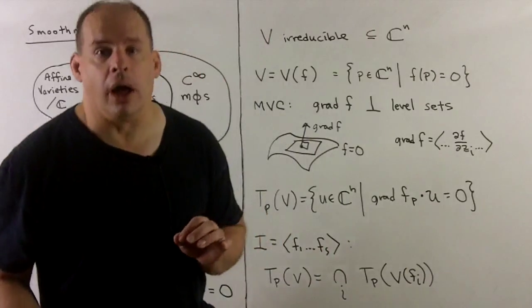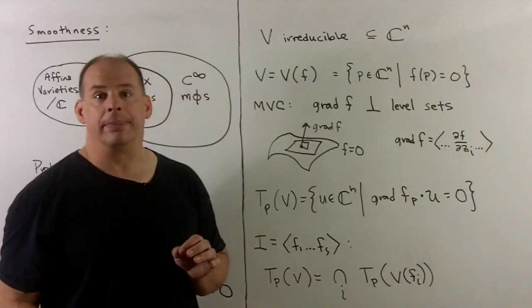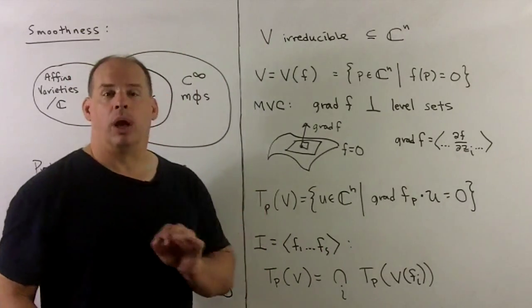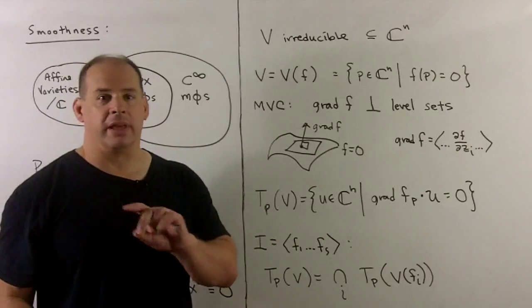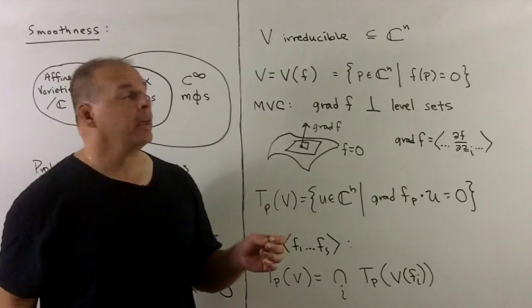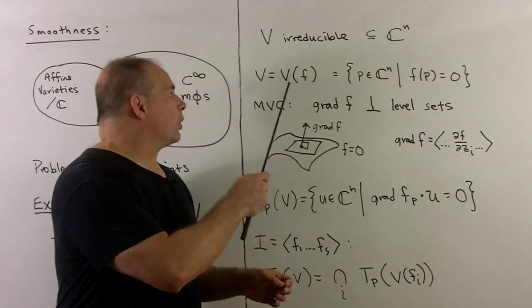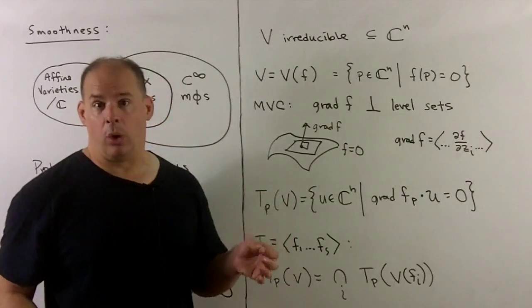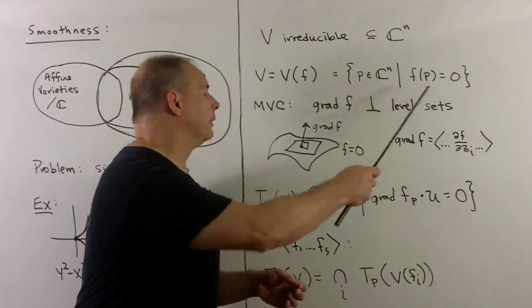We're going to get a handle on what it means to be a singular point. The assumption we'll have for the rest of this is that V is an irreducible affine variety inside C^n. First, we'll consider the case where we have vanishing of a single polynomial.